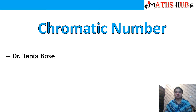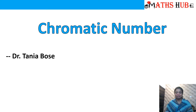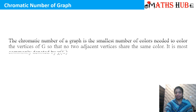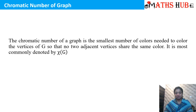Hello students and welcome to my channel MathsHub. Today I will tell you about the chromatic number in a graph. The chromatic number of a graph is the smallest number of colors needed to color the vertices of graph G so that no two adjacent vertices share the same color. It is most commonly denoted by chi of G.